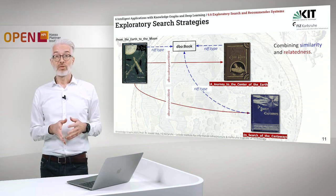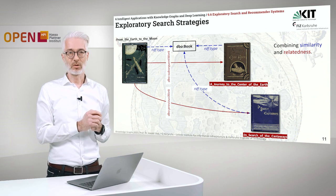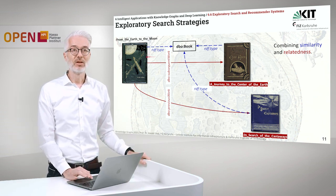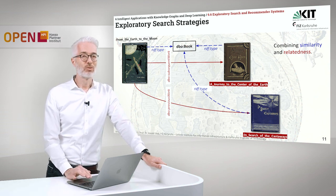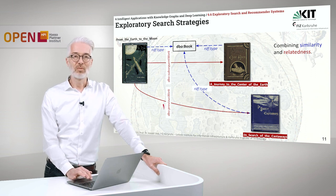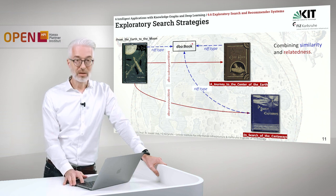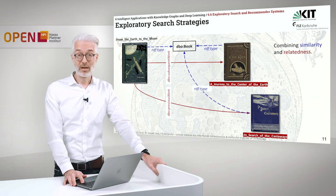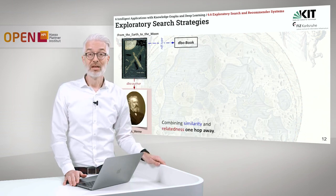Let's get more concrete. We want to combine similarity and relatedness for book recommendations in exploratory search. Starting from 'From the Earth to the Moon,' we look for other books directly related to it. In DBpedia we have two properties: 'subsequent work' and 'previous work.' The previous work was 'In Search of the Castaways' and the subsequent work was 'A Journey to the Center of the Earth.' Both are books — simple recommendations based on similarity and relatedness — but they might be too close to our original author.